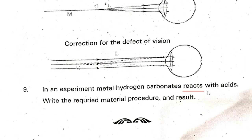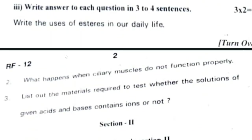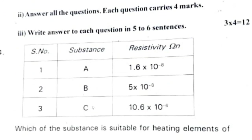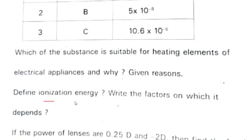Reaction of metal hydrogen carbonates with acids. Last question paper: What are the uses of esters in our daily life? What happens when the ciliary muscle does not function properly? List the materials required to test whether the solution of given acids and bases contains ions or not. Section 2: Table-related question. Define ionization energy and write the factors on which it depends. If the power of two lenses are 0.25 D and minus 2D, find the focal length of the two lenses and mention the type of lenses used.